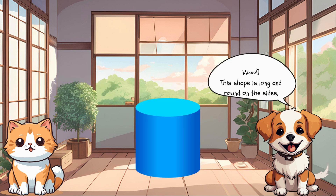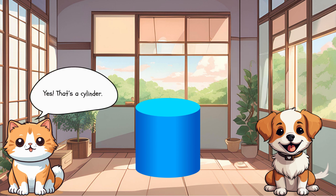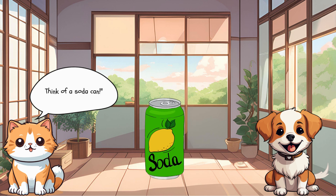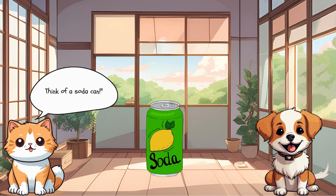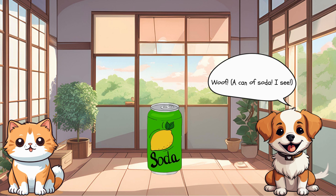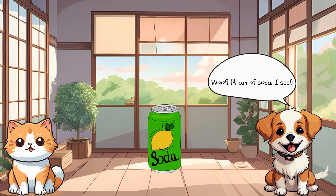This shape is long and round on the sides, but flat on the top and bottom. Yes! That's a cylinder. It can roll like a sphere, but it also has 2 flat faces. Think of a soda can. A can of soda — I see!